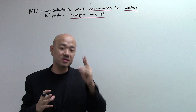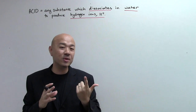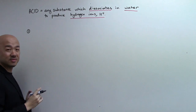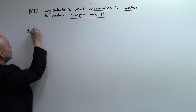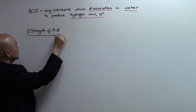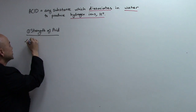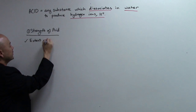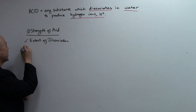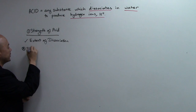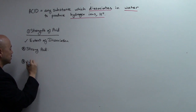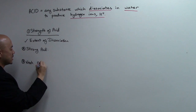You will normally hear two words: one is called strong acid, and the other one is called weak acid. So the first method to classify acids is based on the strength of the acid, based on the extent of dissociation. There are two types: strong acid and weak acid.